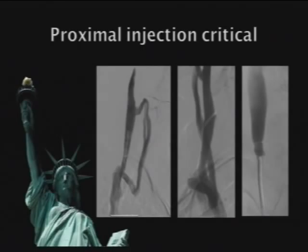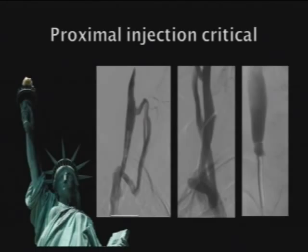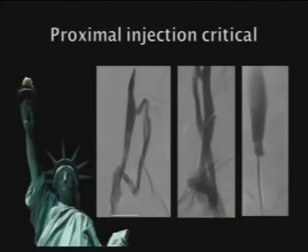In a very interesting case, a catheter was placed mid-jugular vein — a big collateral filled and dumped out distally, indicating an obstruction between those two areas. Pulling the catheter back revealed a fine membrane: a horizontal membrane sitting in the jugular vein that the catheter had pushed out of the way, hiding it on earlier injections. Injecting very close to the orifice is very helpful in detecting such abnormalities, but this can be very misleading.